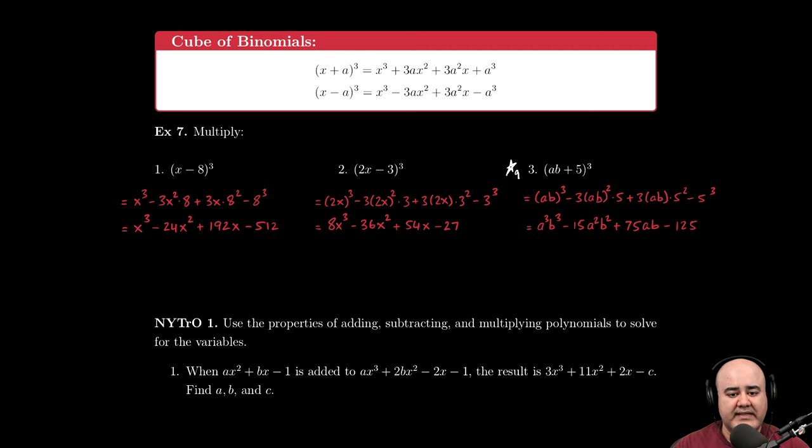Let's finish this section with the last example. So here we have 2x minus 3, the quantity cubed.